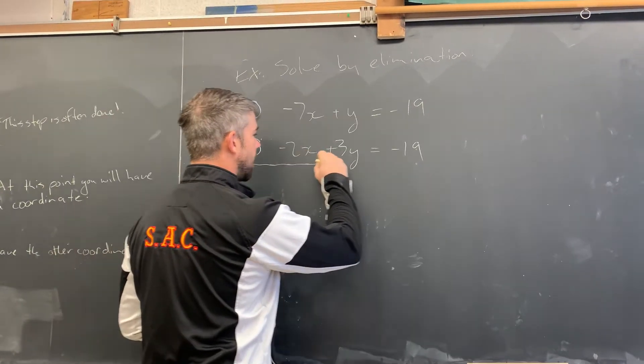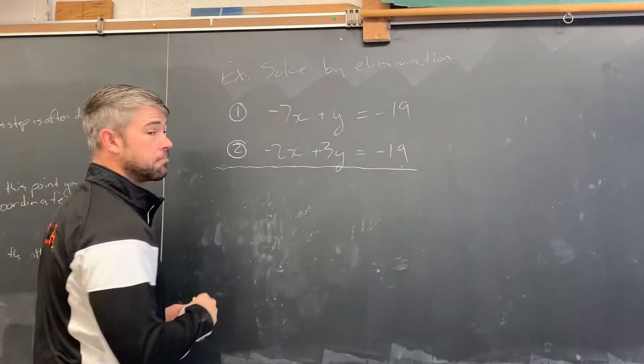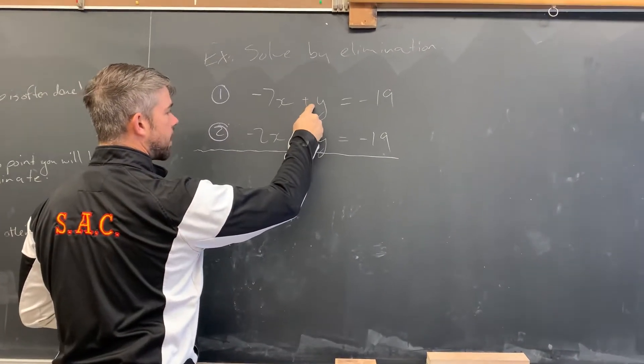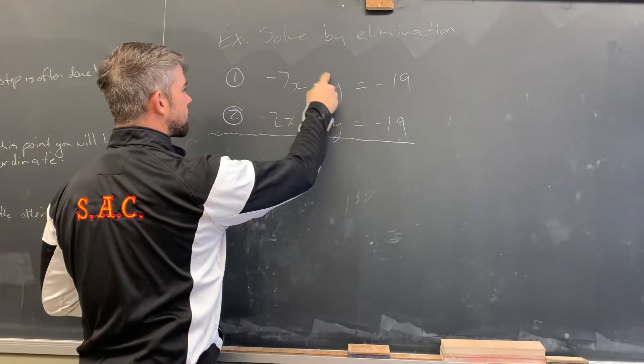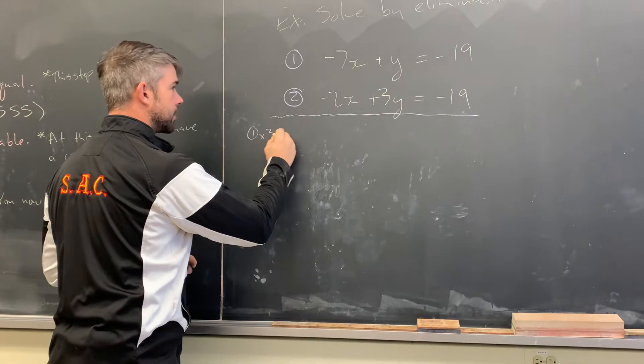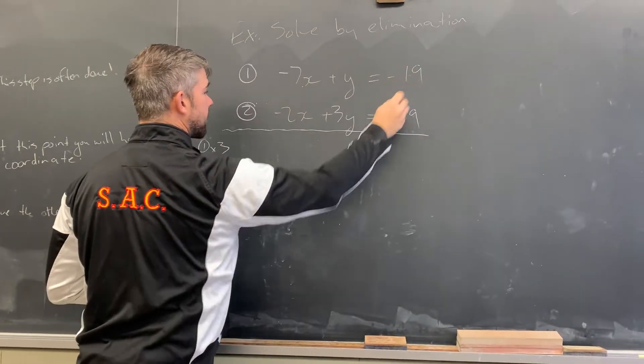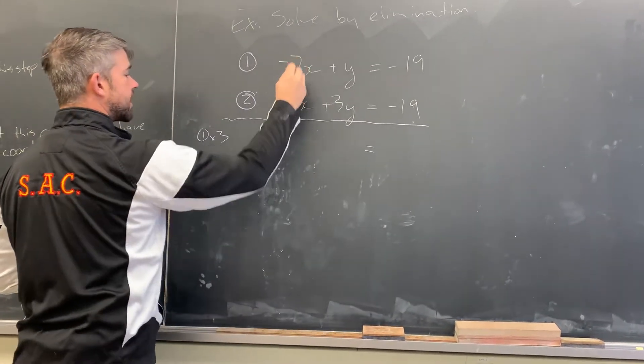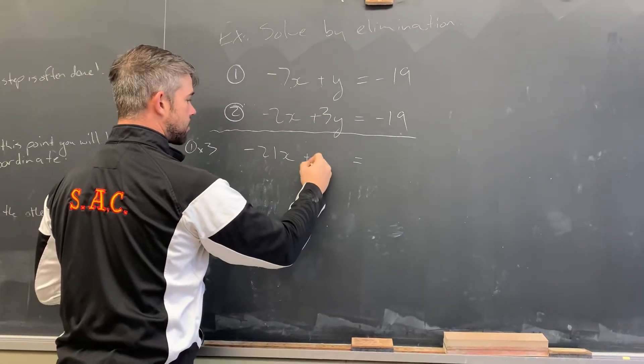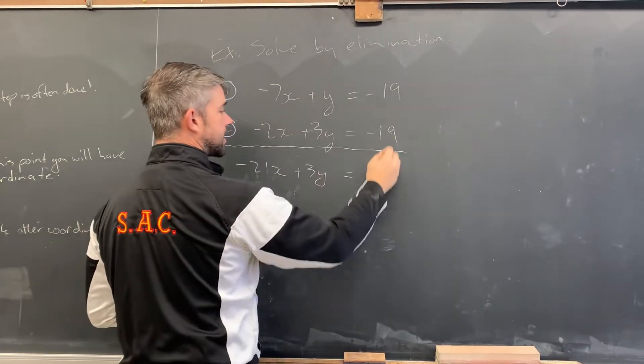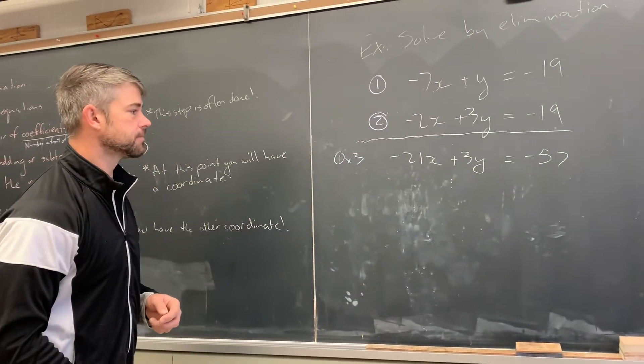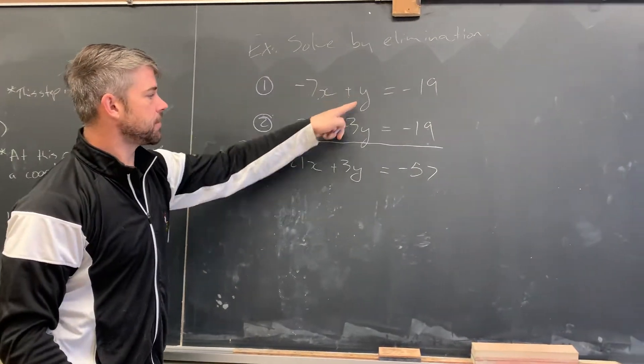So what I'll do is I'll make a little line because I'm going to actually have to manipulate the equations here. I think it's probably easiest to change this one into a three. So the way I'm going to do that is by multiplying all of equation one by three. So every term in equation one is going to get multiplied by three. So negative seven times three is negative 21x. Positive one times three is positive 3y. And negative 19 times three is negative 57. I think, at least I hope it is.